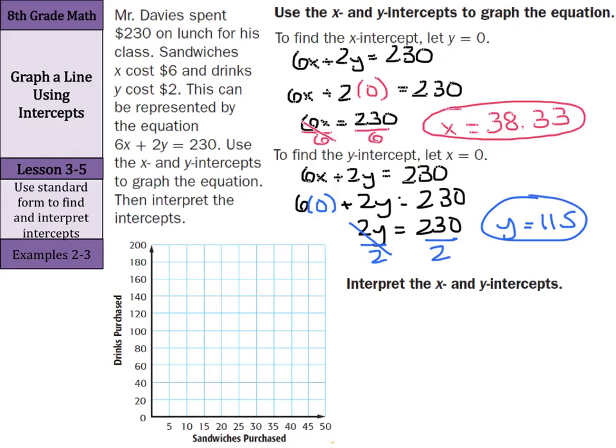Now, what does this mean for my points? Well, if y is 0 here with my x-intercept, this is the point (38.33, 0), which on my graph is right around there.